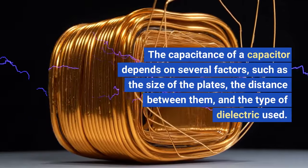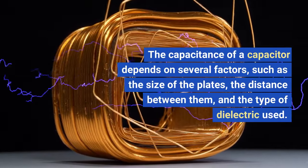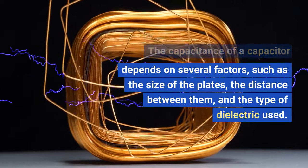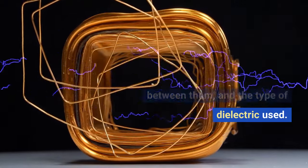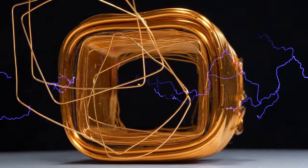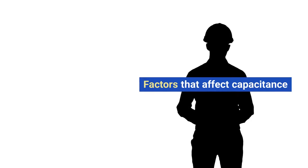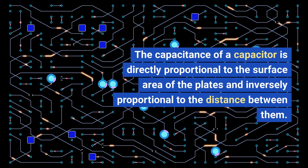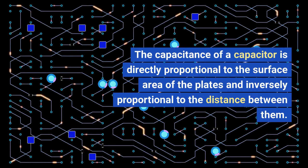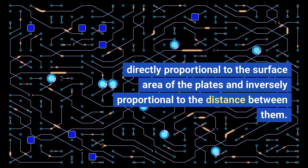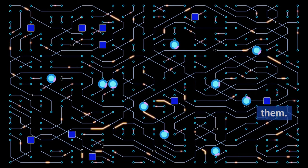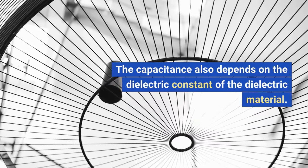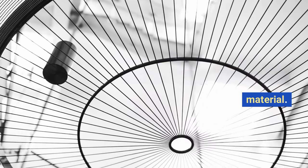The capacitance of a capacitor depends on several factors, such as the size of the plates, the distance between them, and the type of dielectric used. The capacitance of a capacitor is directly proportional to the surface area of the plates and inversely proportional to the distance between them. The capacitance also depends on the dielectric constant of the dielectric material.